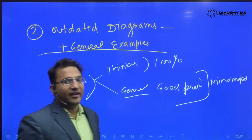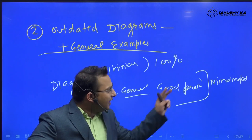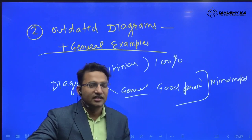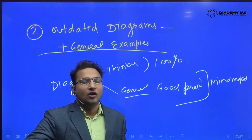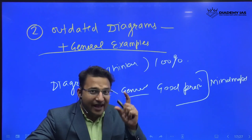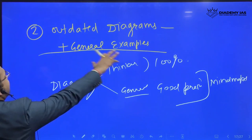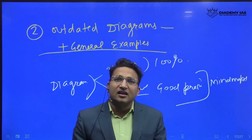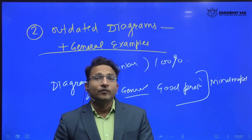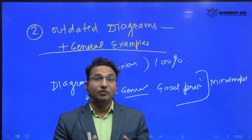Our classroom students — we are running a classroom program — they are making mind maps after every class and submitting them, which makes them habitual of summarizing the content. Writing good answers needs summarized, to-the-point content. Next, general examples: if you use examples which are outdated or very common, it will not make sense. Use the latest examples from authentic books.